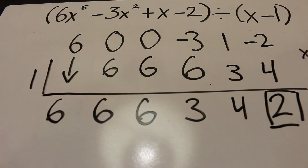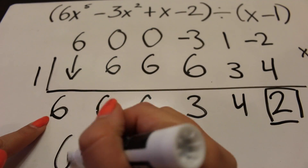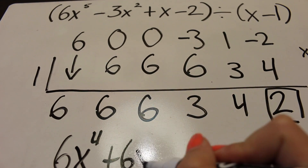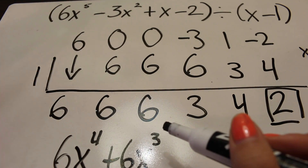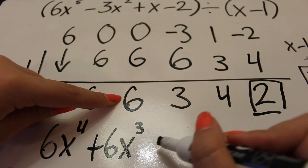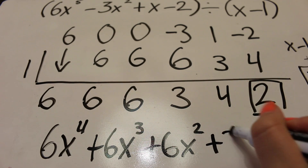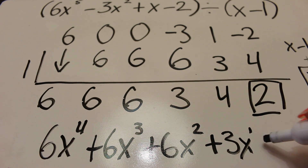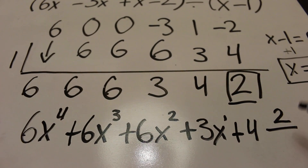Box the last number — that is your remainder. For the final answer: the first number is 6, and since the original highest power was 5, subtract 1 to get x to the power 4. So 6x to the power 4, plus 6x to the power 3, plus 6x to the power 2, plus 3x to the power 1, plus 4, plus the remainder over the divisor x minus 1.